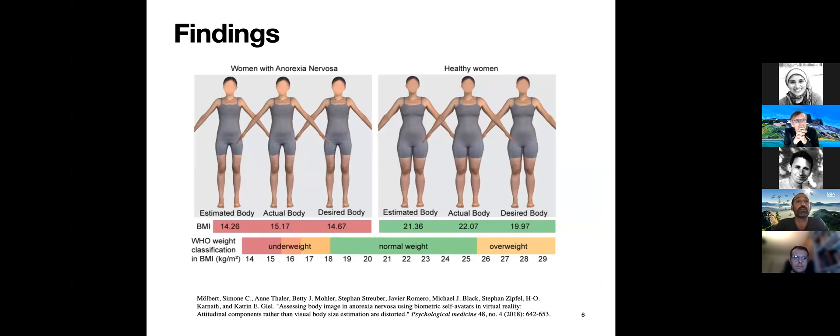Let me jump to the results. Starting with the right hand side, the healthy woman, we have the actual body in the middle with a BMI of 22. Results show that when you ask people to adjust their body, we think we're a bit thinner than we actually are. People estimated their body with almost one point less BMI. When asked about their desired body, this goes further, descending two points in BMI. So we would like to be thinner than we are.